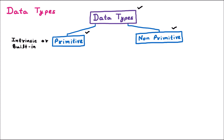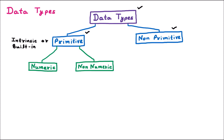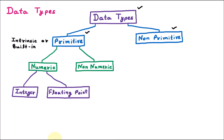Primitive data types are further classified into two categories: the first is numeric data types and the second is non-numeric data types. Whenever we are dealing with numbers like 1, 2, 3, or 320, they are called numeric data types. These are further classified into two categories: integer data types and floating point data types. Integer is for whole numbers like 1, 2, 3, or 173, while floating point is for decimal values like 123.7.